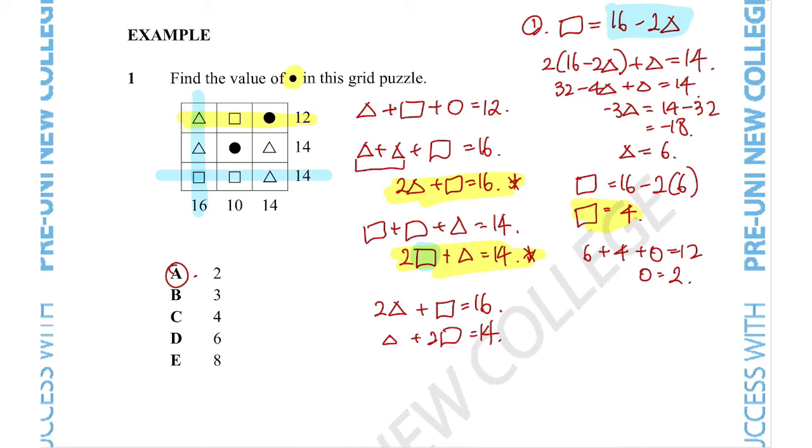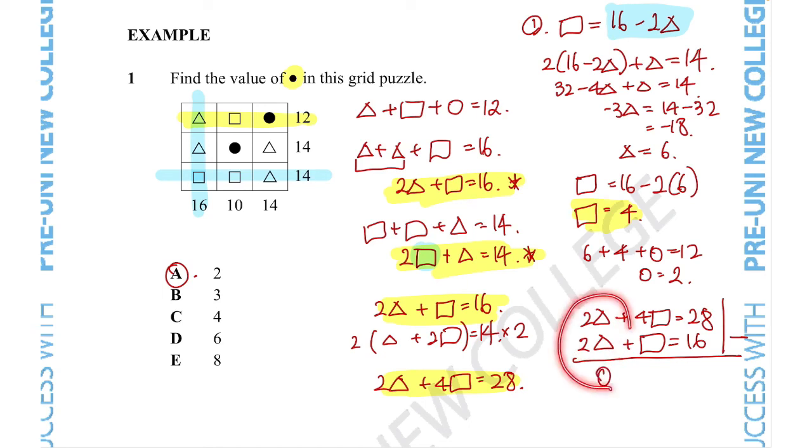Now, remember in equations, you can do whatever you want to it as long as you do it to both sides of the equation. I'm going to multiply both sides of this equation by 2 to give us 2 triangle plus 4 square is equal to 28. Now, with these two equations, what we can do is we can actually subtract them from each other. So from 2 triangle plus 4 square is equal to 28, I'm going to subtract the entire equation 2 triangle plus square is equal to 16. So what that looks like is you do each subtraction column by column by column like this. So the math is 2 triangle minus 2 triangle is equal to 0. And that's the reason I multiplied this equation by 2. That allows me, when subtracted, to get rid of this entire column.